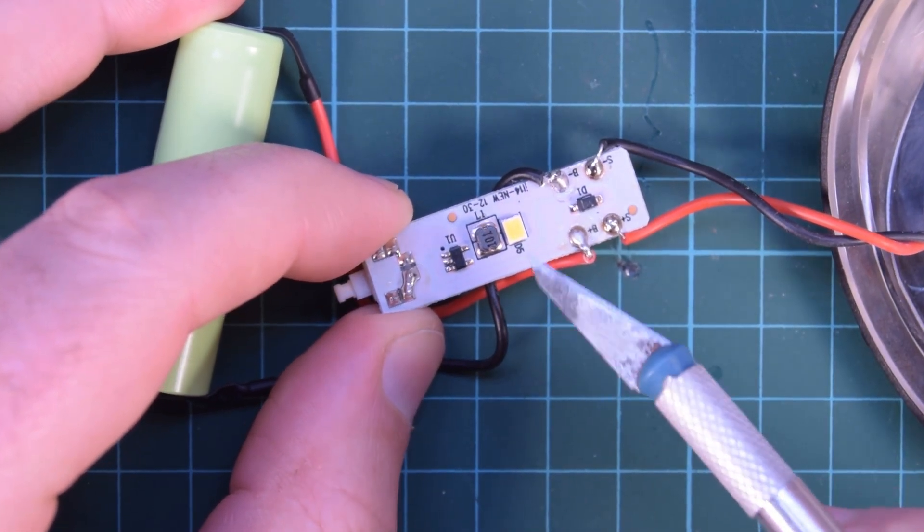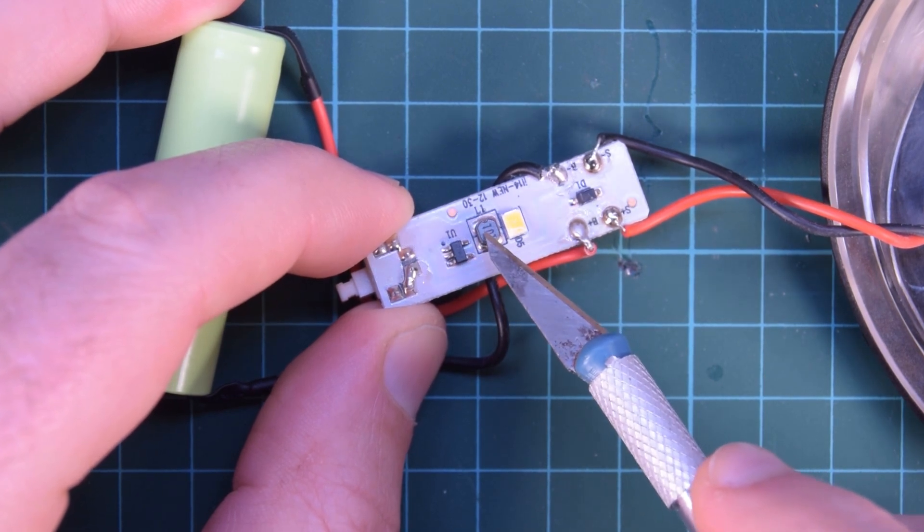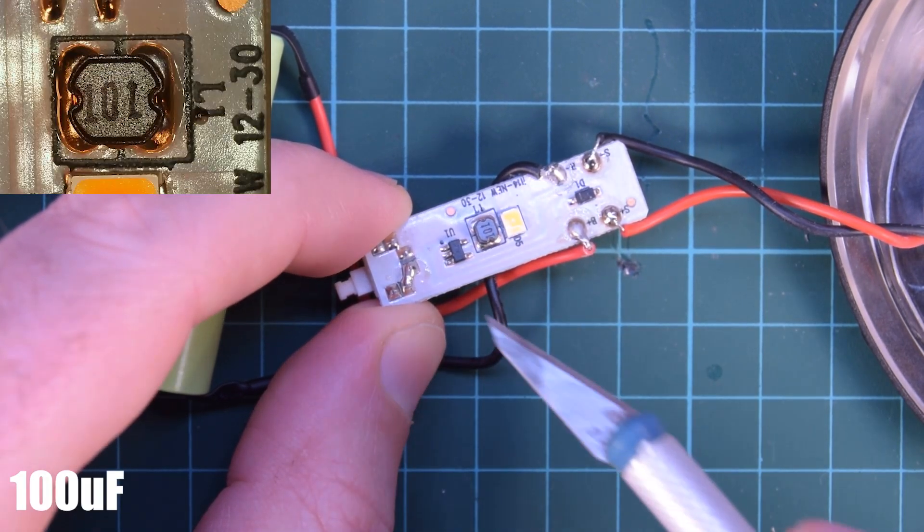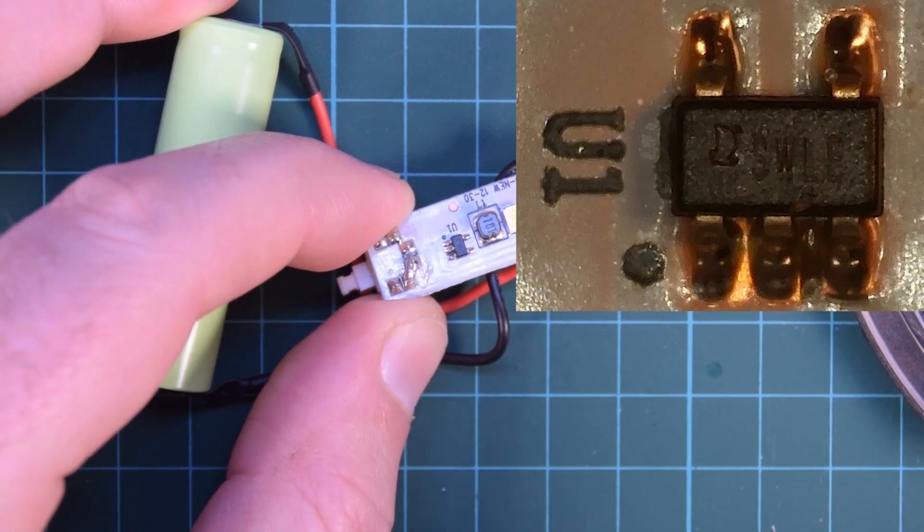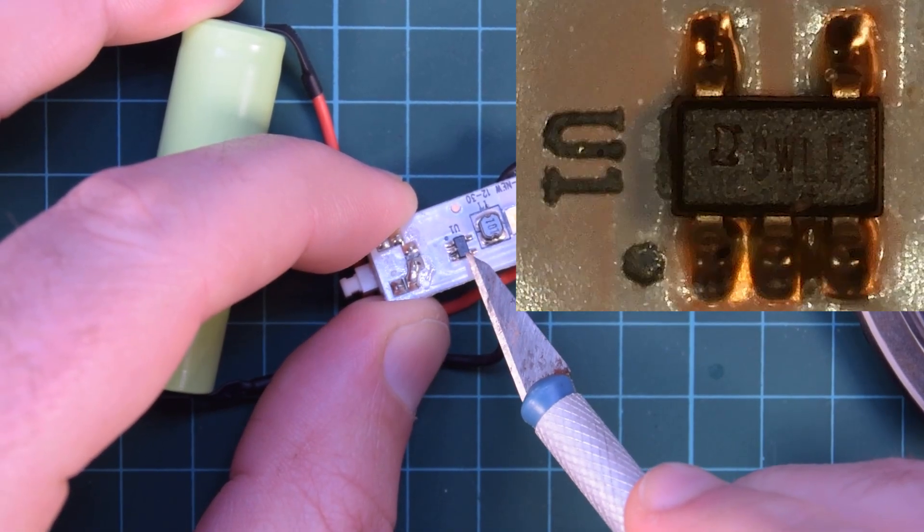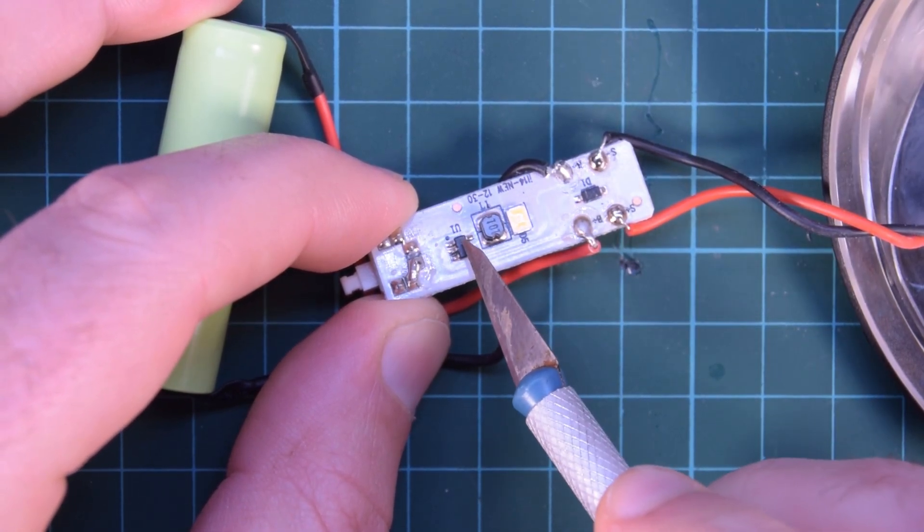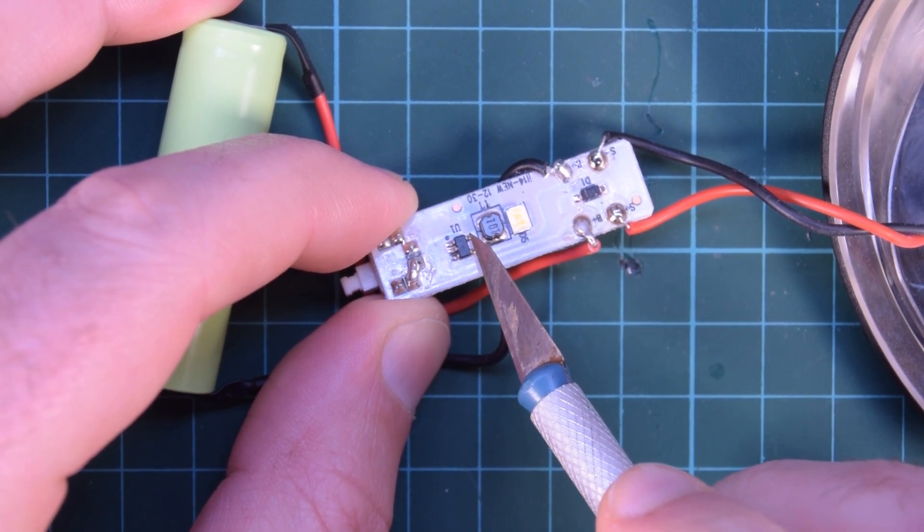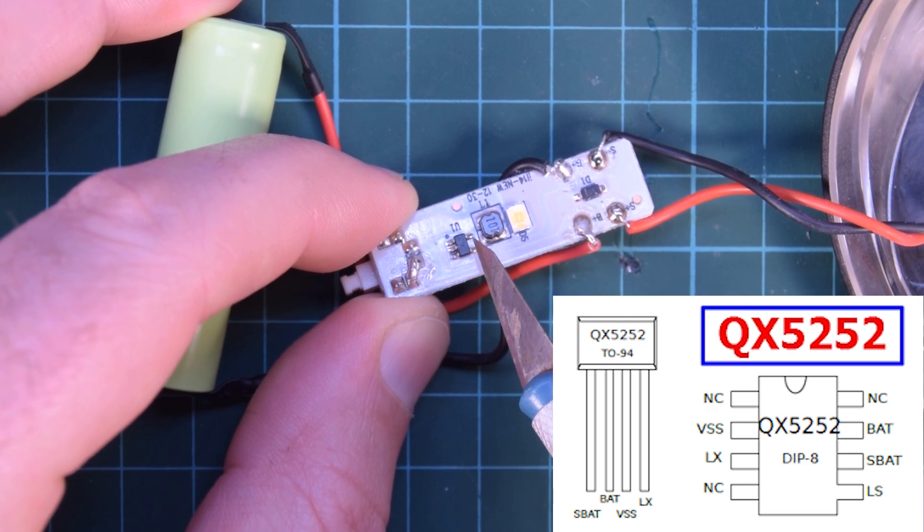And then we have what I thought I saw through the glass was an LDR, but really this is an inductor. And then we've got this little chip. 5WLE is what this chip is marked with. And I can't find that anywhere.